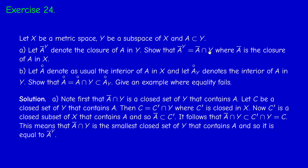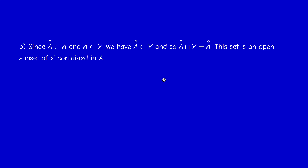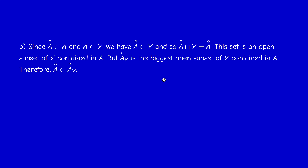We can give examples. Try to come up with an example in the real line. For instance, take X = ℝ and Y = (0,1) or (0,∞). Now A° ∩ Y always equals A°. This is an open subset of Y, because it is the intersection with Y of an open set in the bigger space X. But A°_Y is the biggest open subset of Y contained in A. Therefore A° is contained in A°_Y.